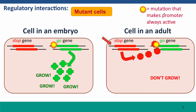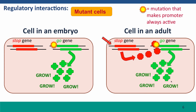What about a similar mutation in the promoter of the go gene? Again, this mutation won't change the phenotype of the embryonic cells because the go gene is already on. But it will change the phenotype of the adult cell, because it will cause the go gene to be expressed even though the stop protein is being made. That means that this cell is going to grow when it shouldn't. This is important because this phenotype is the phenotype of a cancer cell — a cell in an adult growing when it shouldn't.